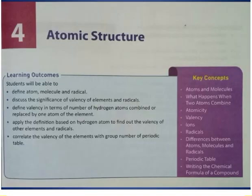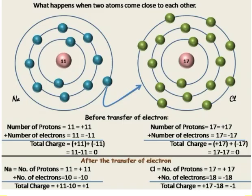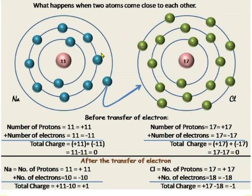Now we can understand what happens when two atoms combine or come close to each other. When two atoms come close to each other, one atom gives its electron to the other atom.